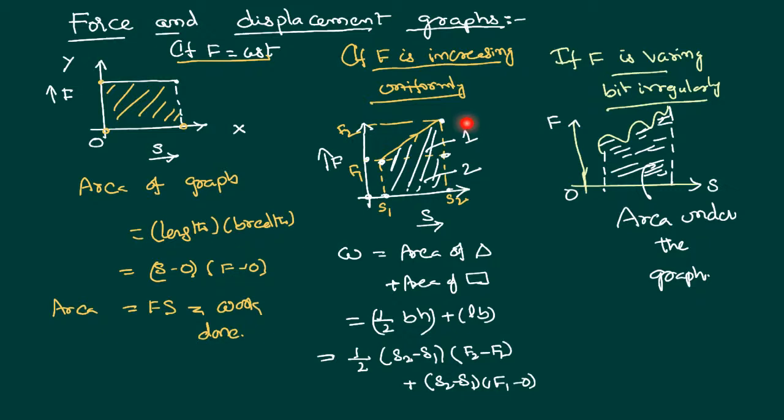The area under this curve has two parts: area of the triangle and area of the rectangle. So we write the work done as the sum of these areas. As per geometry, area of the triangle is half times base times height, and area of the rectangle is length times breadth. Let us substitute the values.